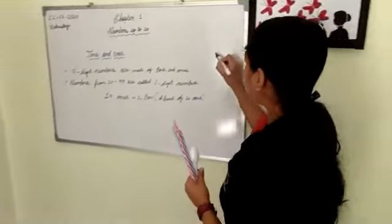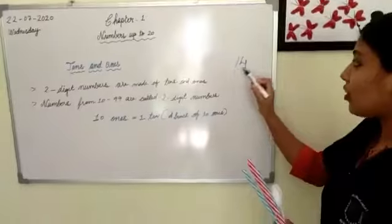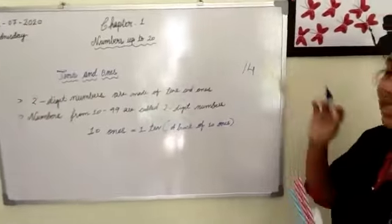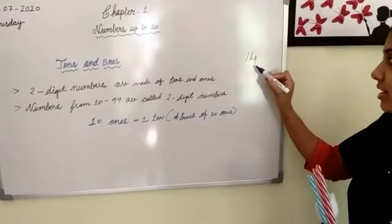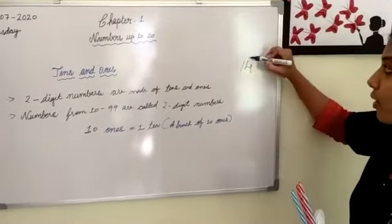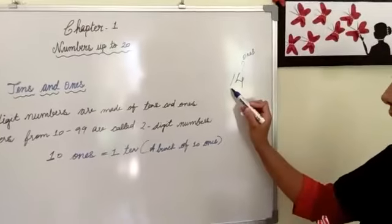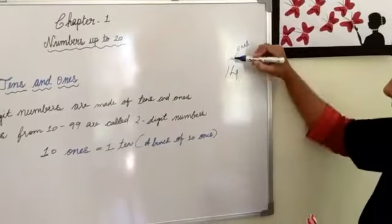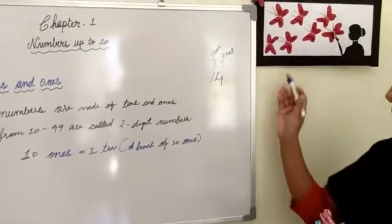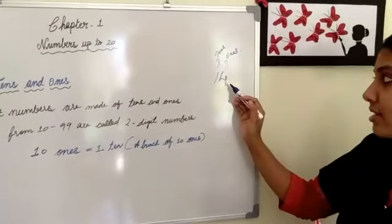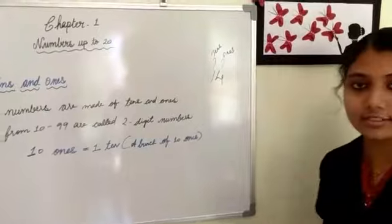So write the number 14 here. 14 is a two-digit number. From the right, the first digit is 4, and 4 is in the ones place. Then the second digit is 1, and 1 is in the tens place. Which means in a two-digit number, from the right the first digit is ones and the second digit is tens.